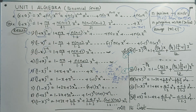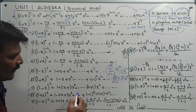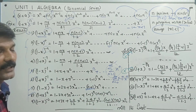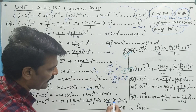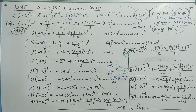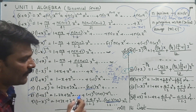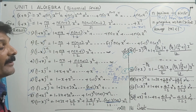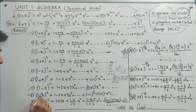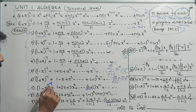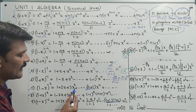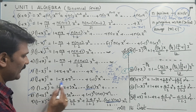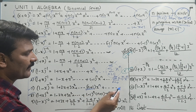For power minus 2: the coefficient term changes. Power minus 2 gives n plus 1 as coefficient. Power minus 3 gives n plus 1 into n plus 2. So 1 minus x whole power minus 2 equals 1 plus 2x plus 3x squared plus etc., with general term n plus 1 into x power n.